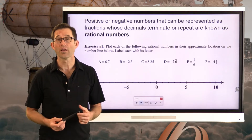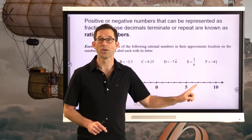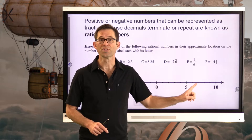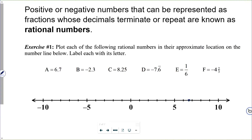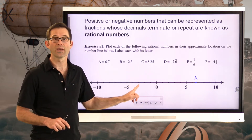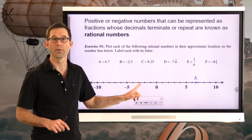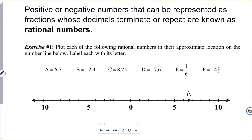Almost none of these are going to be overly easy to place. Even 6.7 — I know 6 is here and 7 is there, so 6.7 has to be between them, closer to 7. So 6.7 goes right about there. Negative 2.3 is going to be between negative 2 and negative 3, slightly closer to negative 2 — so B is somewhere right around there. Then 8.25, also known as 8 and 1 quarter: here's 8, here's 9, so 8 and 1 half would be midpoint, and 8 and 1 quarter is right about there.